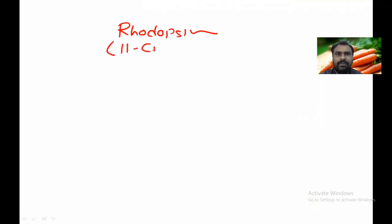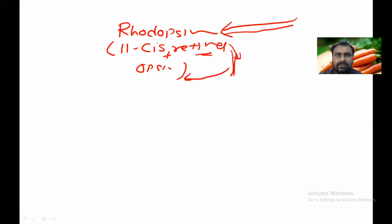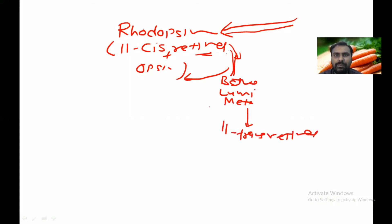Rhodopsin is made up of 11-cis retinal and opsin. When light falls on the retina, there is a photoexcitation and visual excitation. The opsin is reutilized but 11-cis retinal is converted to bathorhodopsin, lumirhodopsin, metarhodopsin 1, 2, and ultimately to 11-trans retinal.